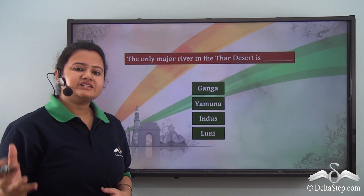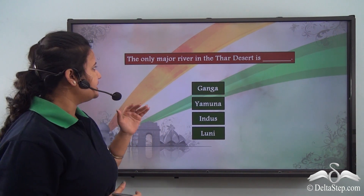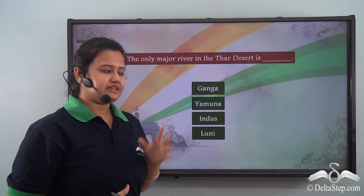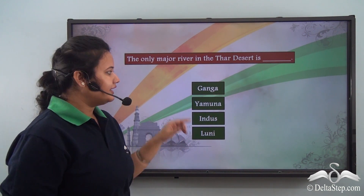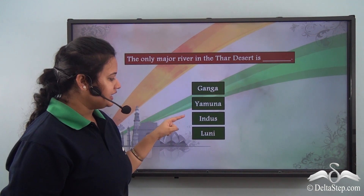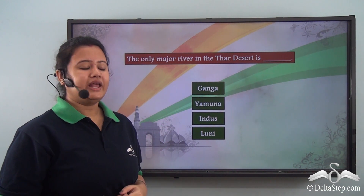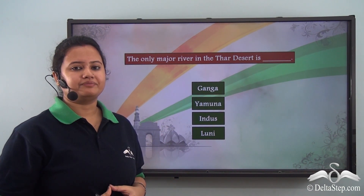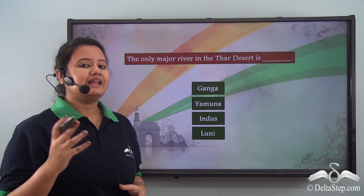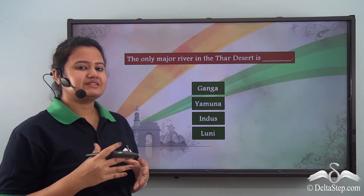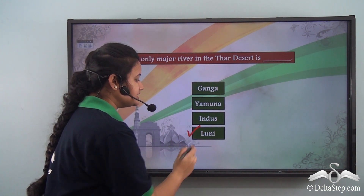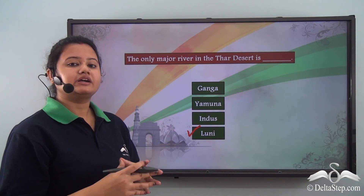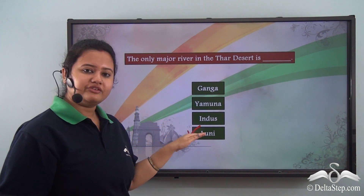Before proceeding, let's answer this question: the only major river in Thar Desert is — Ganga, Yamuna, Indus, or Luni? We just read that Luni River is the only major river in Thar Desert, so the correct option is Luni River.